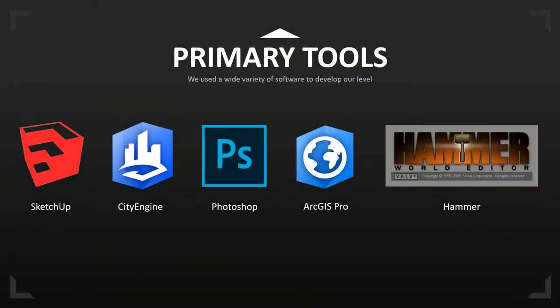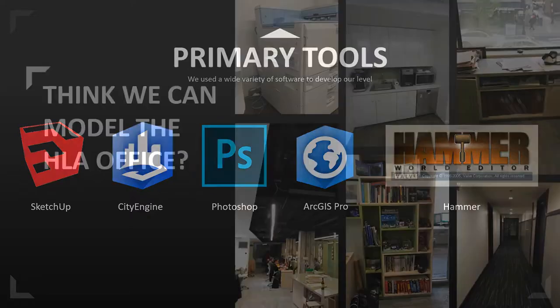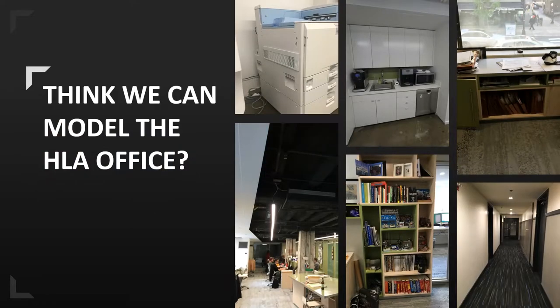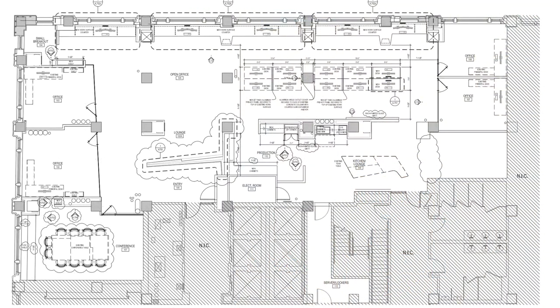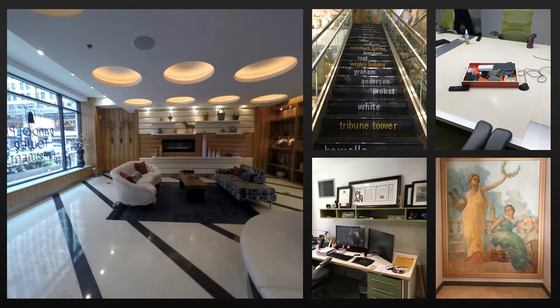Using SketchUp, CityEngine, Photoshop, ArcGIS Pro, and the Hammer editor, last summer we started looking around our office and said: can we model this out and give our staff a playground to have some fun? My brother's the architect — we had all the CAD plans. We brought these into SketchUp and did all the interior work there. When we got outside to the streets is where we did some really cool work with CityEngine.